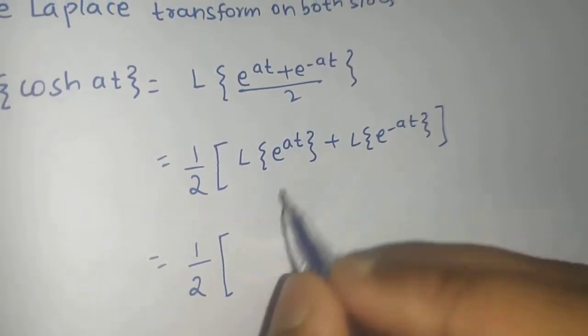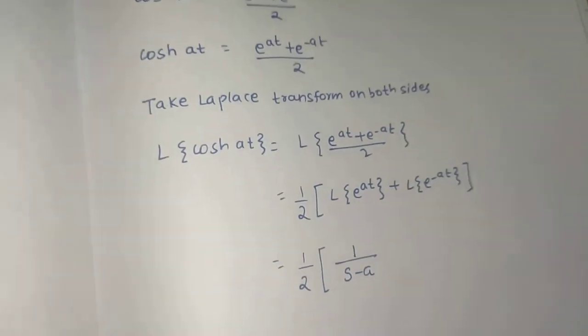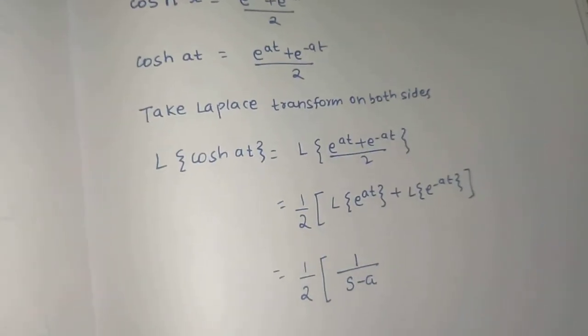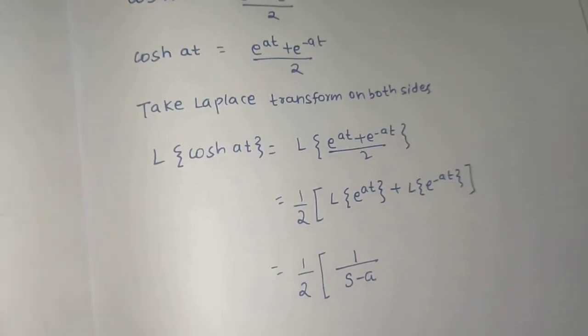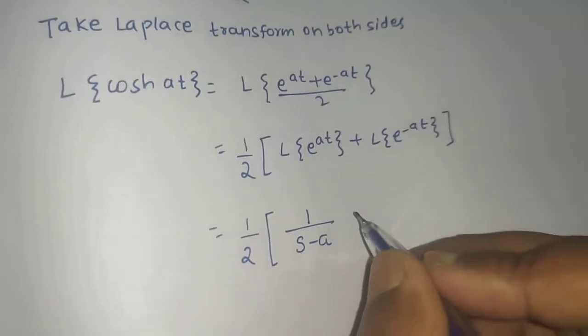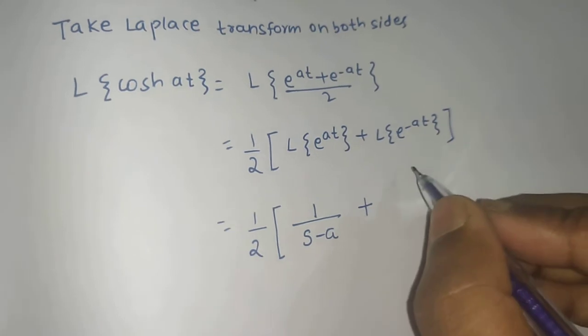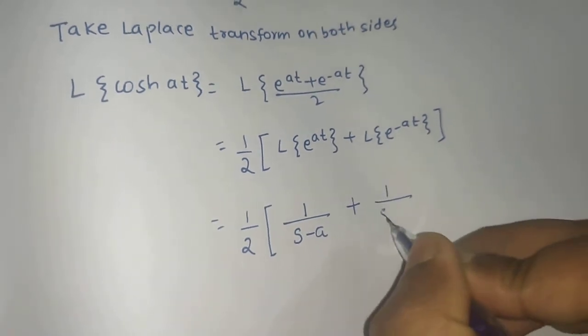Now Laplace of e raised to power at is 1 over s minus a. This time I will be using direct formula. In the previous video on Laplace of sinh of at, I proved that, and now I think you can easily do that. So 1 over s minus a. Laplace of e raised to power minus at is 1 over s plus a.